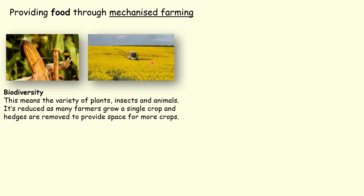Farmers will cut down hedges so that they have the largest amount of land possible to farm. This destroys the creatures that are in the hedges. They have one crop within a field and this totally reduces the number of plants in our countryside. In this example you can see oil seed being grown, so there's only one plant within that field. If weeds grow they will be destroyed, and insects and creatures might not like oil seed so they might move away. Having one crop in one field means a loss of biodiversity.